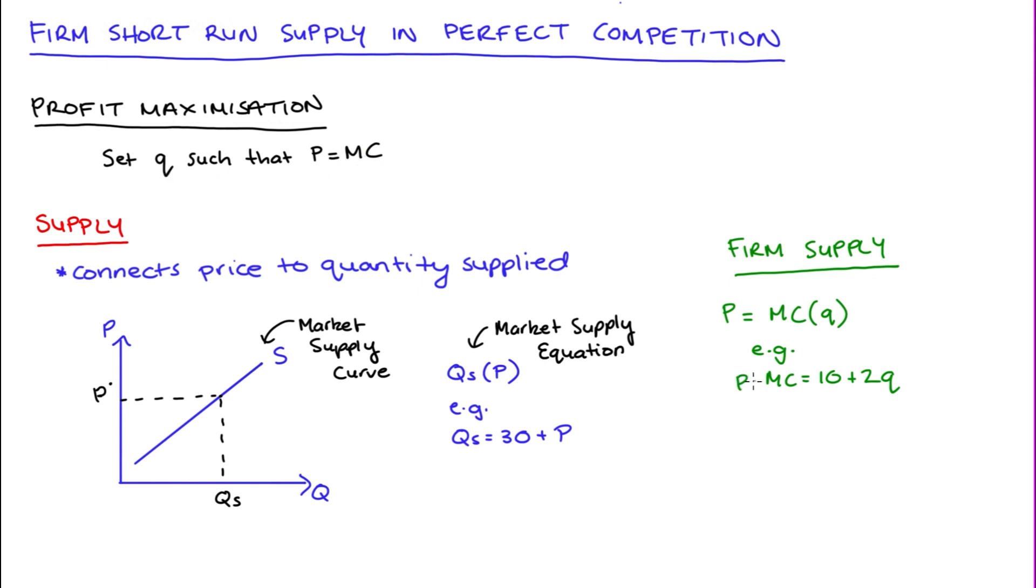And we can see in these equalities, we have a relationship between the price p and the quantity that the firm supplies. So actually from this, we get the supply equation, p is equal to 10 plus 2q. And you can note that this supply equation is equal to marginal cost.